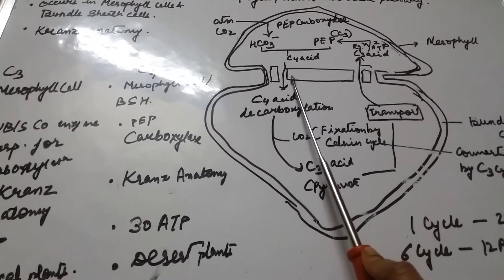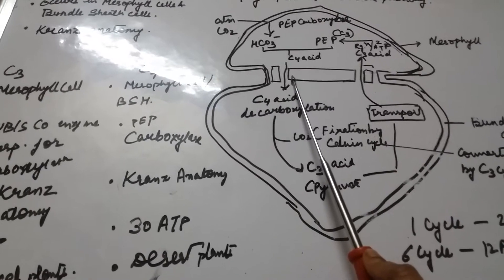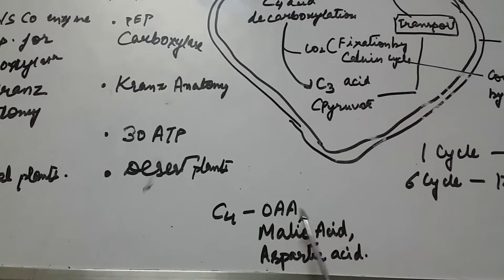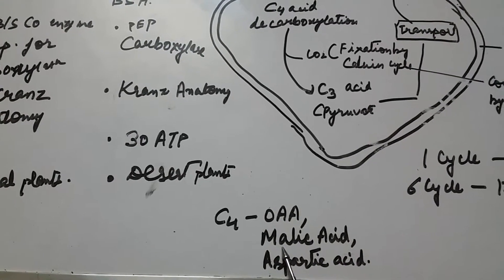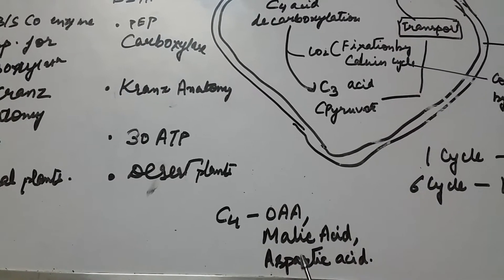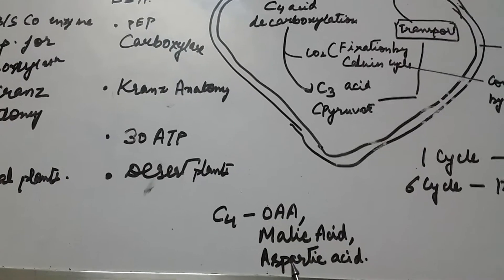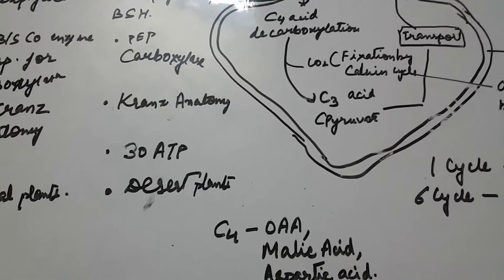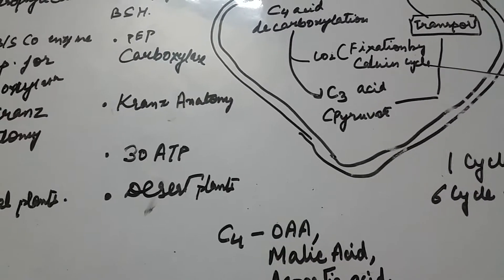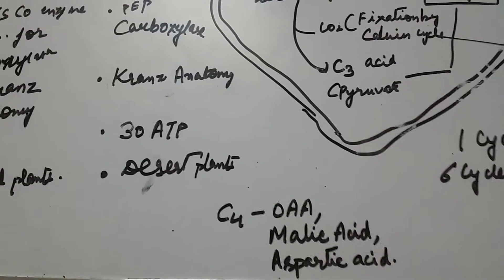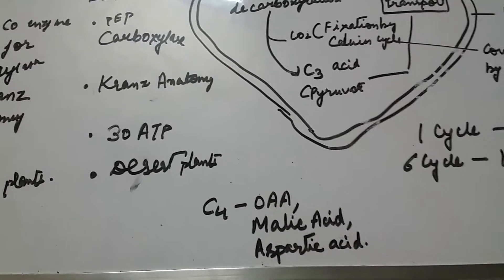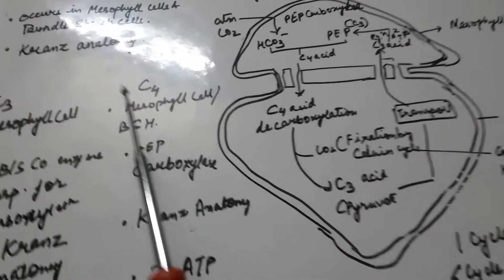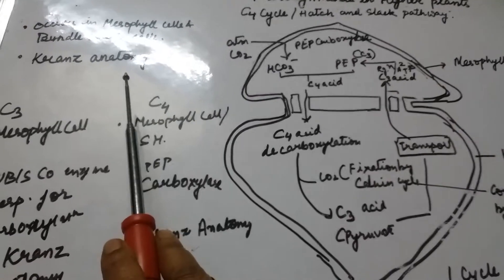This C4 compound is the first stable product formed, and it may be oxaloacetic acid, malic acid, or aspartic acid. These are the C4 compounds formed in the Hatch and Slack pathway.